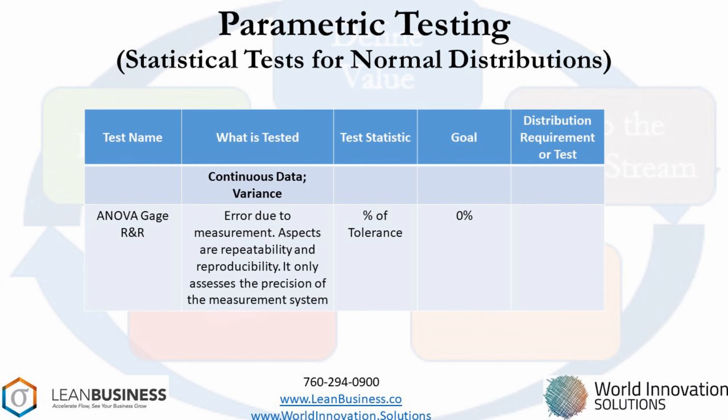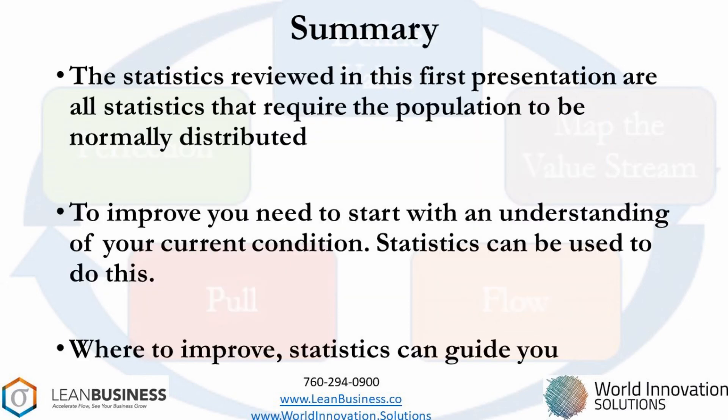This has been a high-level view of some of the statistics used to improve products and services. This first phase has focused only on parametric statistical processes, which are populations that are normally distributed. The next video will delve into statistics you would use for populations that are either not normal or unknown. The right statistics will help you monitor your performance and give you guidance into potential areas to focus your improvement efforts.